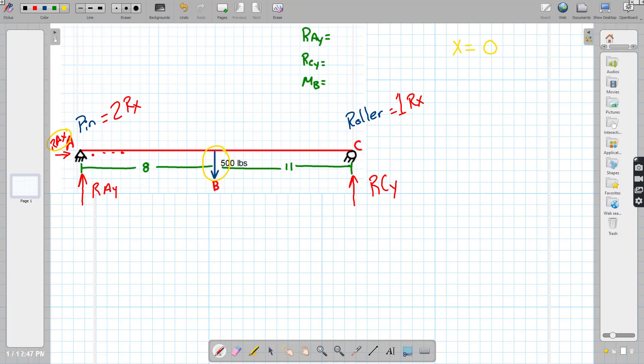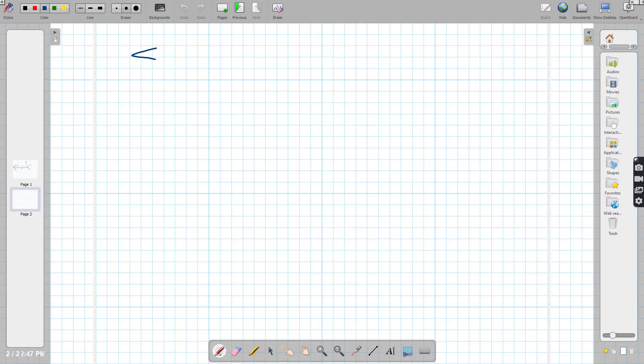So here's a couple of formulas we need to deal with. We know to be in static equilibrium, the sum of all forces in the X direction has to equal zero. The sum of all forces in the Y direction has to equal zero as well.